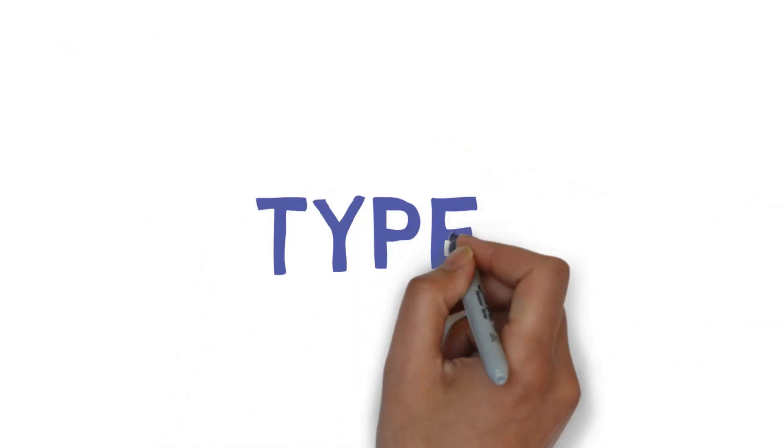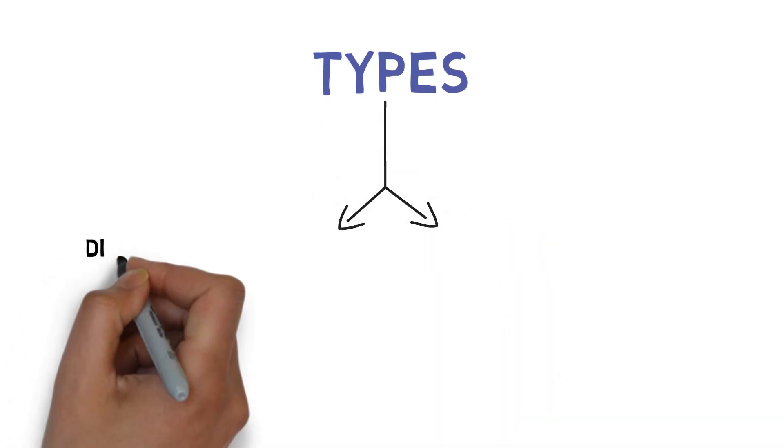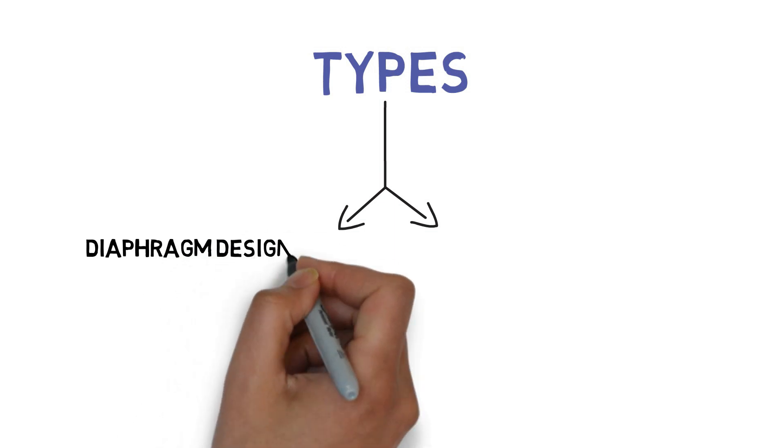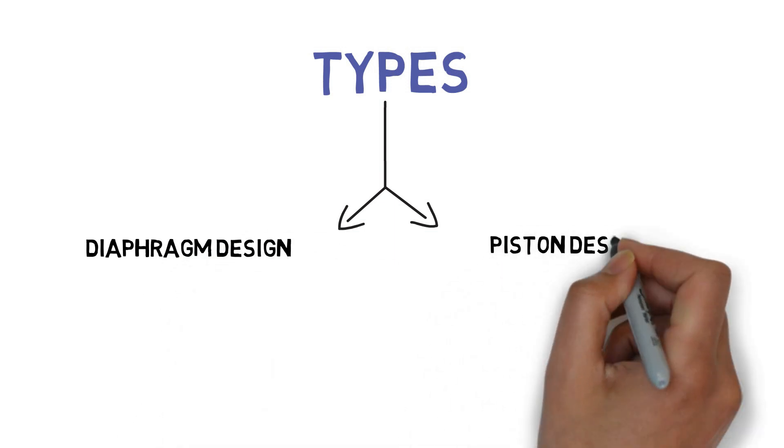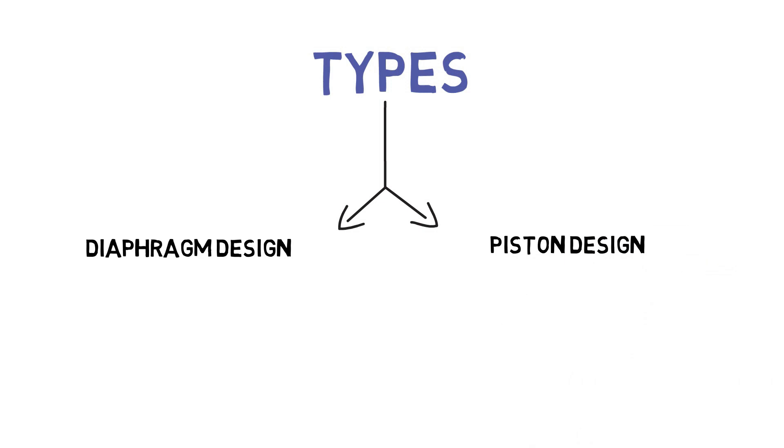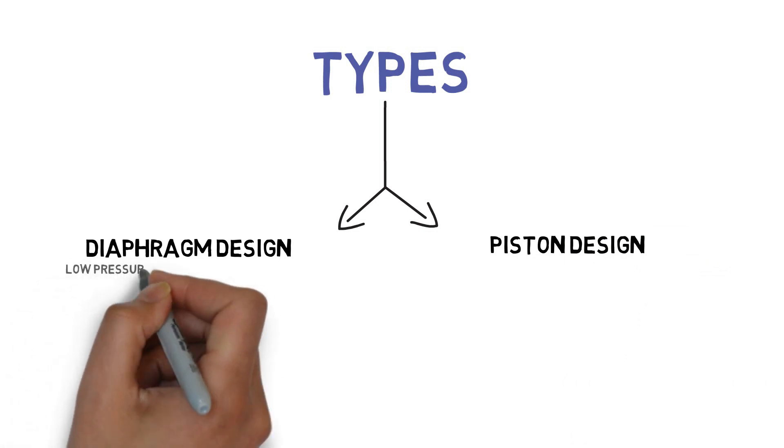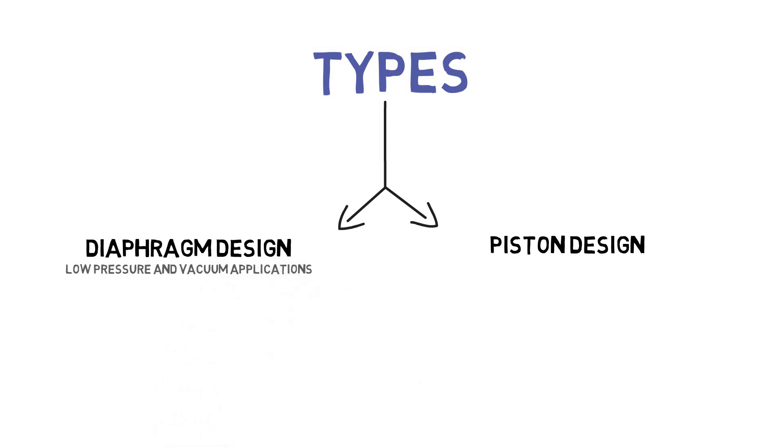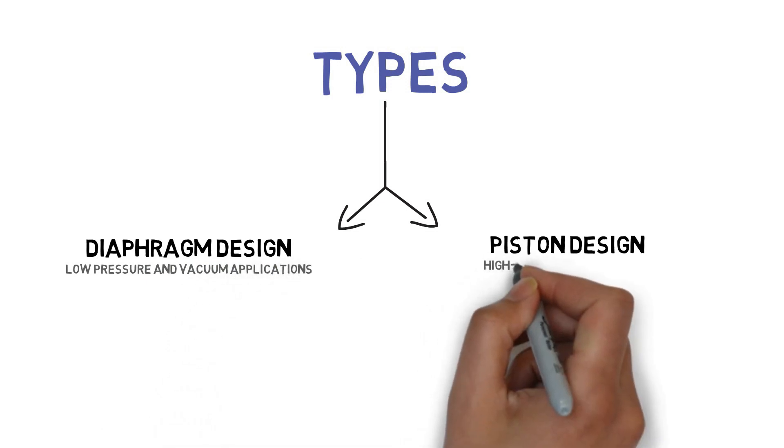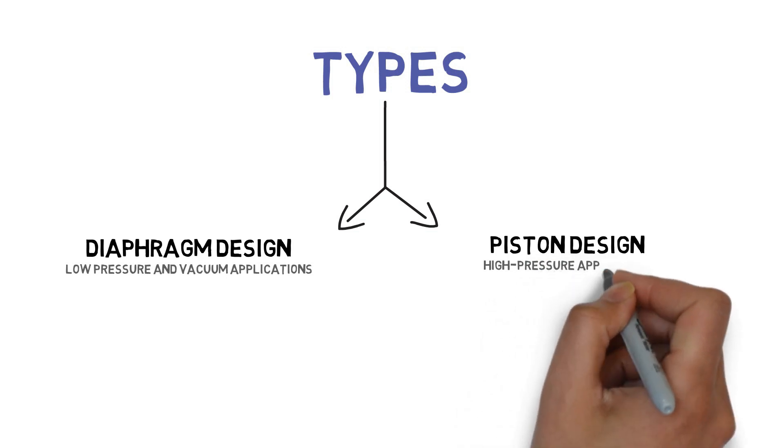Types of pressure switches include diaphragm design and piston design. Diaphragm design is used for low pressure and vacuum applications. Piston design is used for high pressure applications.